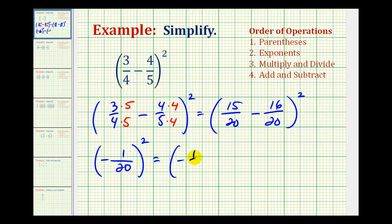Which would be negative one-twentieth times negative one-twentieth. Notice how we have two factors of our base because the exponent is two. A negative times a negative is positive, and one times one is equal to one. And twenty times twenty is equal to four-hundred.